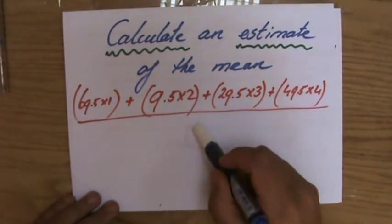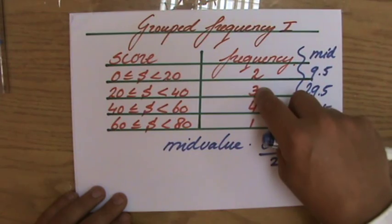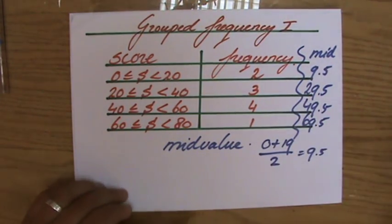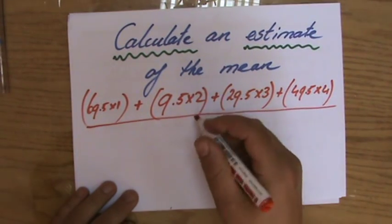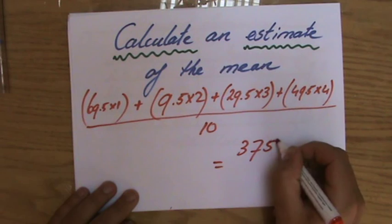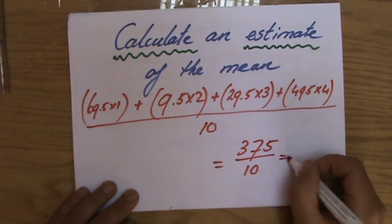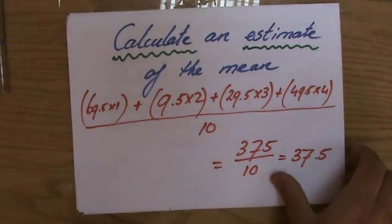How many pieces of information do I have? How many people's score do I have? 2, 5, 6, 10. I have 10 people's score, okay? Divide by 10. And that equals, if you work it out, 375 divided by 10. So that would be a 37.5 as an estimate of the mean score.